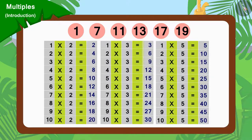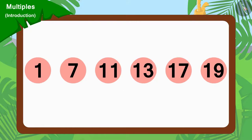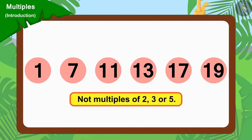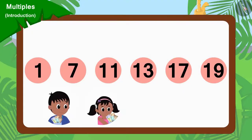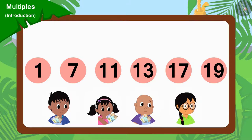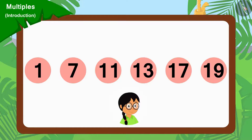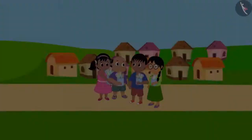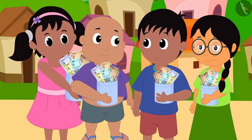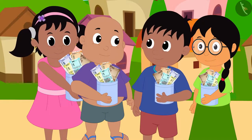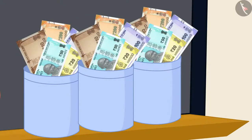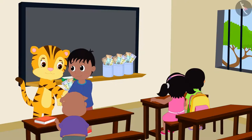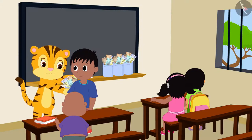Therefore, we can say that these numbers are not multiples of 2, 3 or 5. As none of Raju, Pinky and Bablu were able to go to these houses, they took Meenu's help and asked her to collect donations from those houses. Raju, Pinky, Meenu and Bablu amassed a lot of donations through their hard work. The next day, they gave all the money they had collected to their teacher and got a lot of appreciation from her.